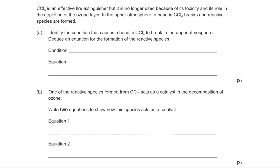So going back to part A, we've got CCL4, an effective fire extinguisher but no longer used because it's toxic and its role in the depletion of the ozone layer. In the upper atmosphere, a bond in CCL4 breaks and reactive species are formed. Identify the condition that causes a bond in CCL4 to break in the upper atmosphere. Deduce an equation for the formation of the reactive species.